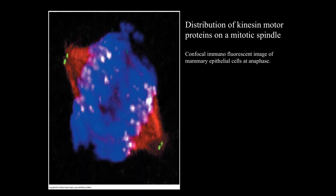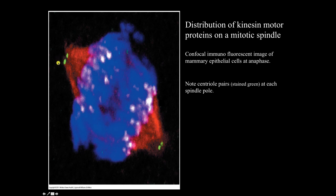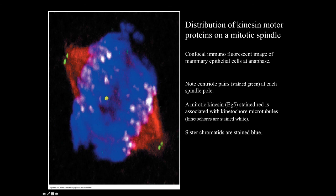This image shows the distribution of kinesin motor proteins on a mitotic spindle — a confocal immunofluorescent image of mammary epithelial cells captured at anaphase. You can see a pair of centrioles at each spindle pole, stained green with a monoclonal antibody to proteins associated with centrioles and the microtubular organizing center. The red staining is an antibody to a mitotic kinesin called EG5, labeled with a fluorescent probe — probably rhodamine — showing this motor on the kinetochore microtubules.